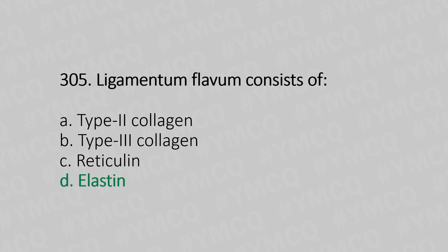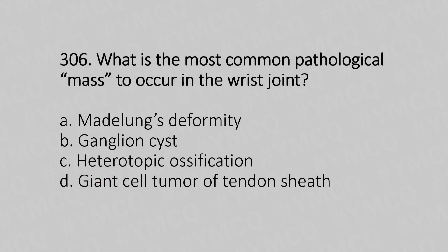Question 306: What is the most common pathological mass to occur in the wrist joint? Option A: Madelung's deformity. Option B: ganglion cyst. Option C: heterotopic ossification. Option D: giant cell tumor of the tendon sheath. The answer is Option B, ganglion cyst.